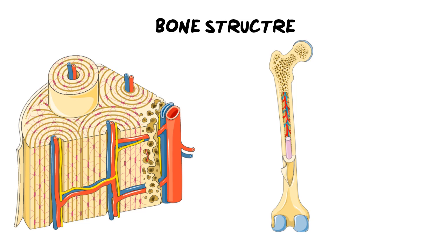In any test or exam you will be asked to either draw a bone or you're going to need to label it. We're going to start off with the more macroscopic structures — the structures of the bone that we can see with the naked eye — and then we're going to zoom in on the bone and identify the smaller, more microscopic structures.